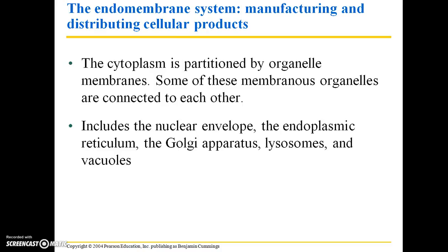The endomembrane system is responsible for manufacturing and distributing cellular products. The cytoplasm is partitioned by organelle membranes, and some of these membranous organelles are connected to each other. It includes the nuclear envelope, the endoplasmic reticulum, the Golgi apparatus, lysosomes, and vacuoles.